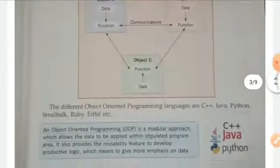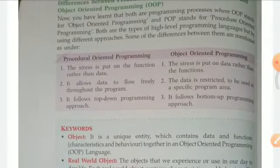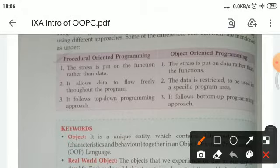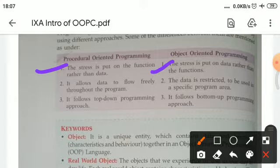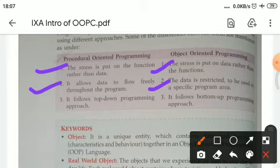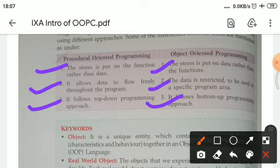Now let's talk about the differences between processor-oriented and object-oriented language. First, processor-oriented puts stress on functions rather than data, while object-oriented puts stress on data rather than functions. Second, processor-oriented allows data to flow freely throughout the program, while object-oriented restricts data to specific program areas. Third, processor-oriented follows a top-down programming approach, while object-oriented follows a bottom-up programming approach.